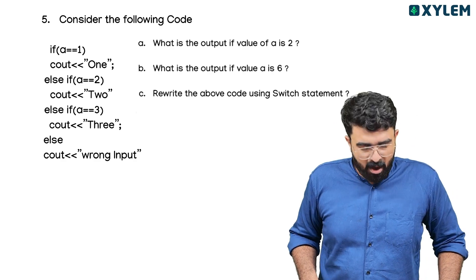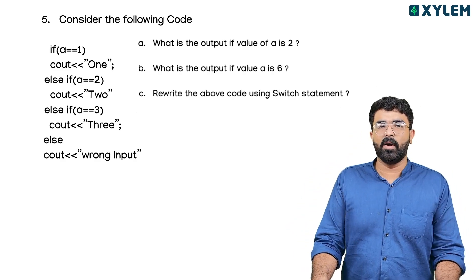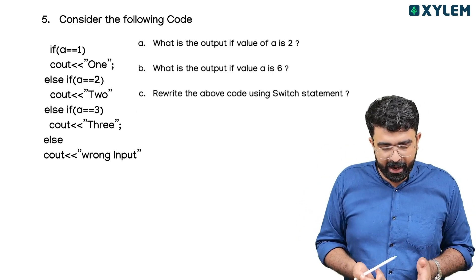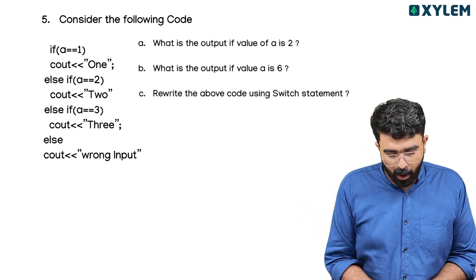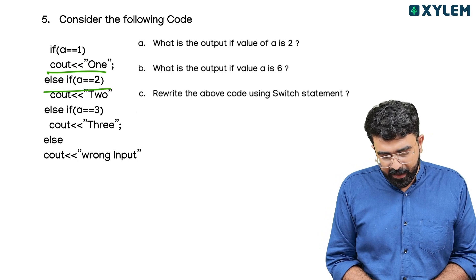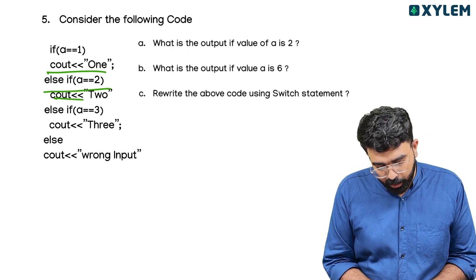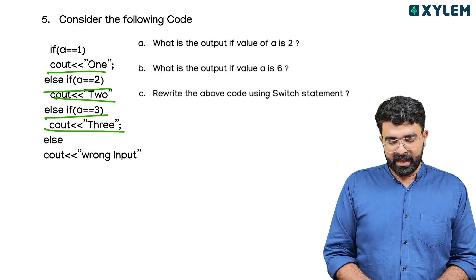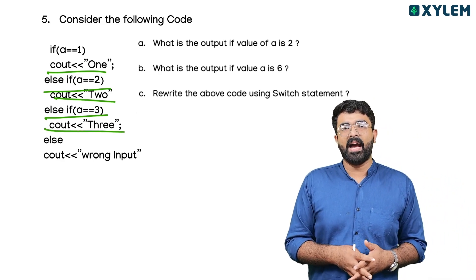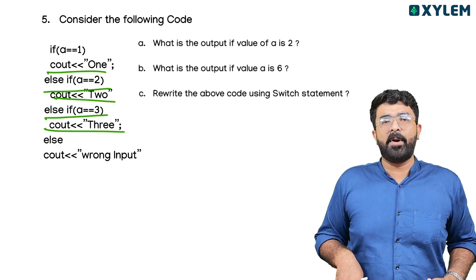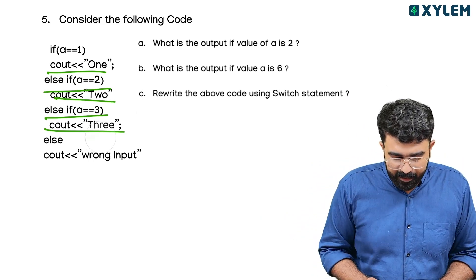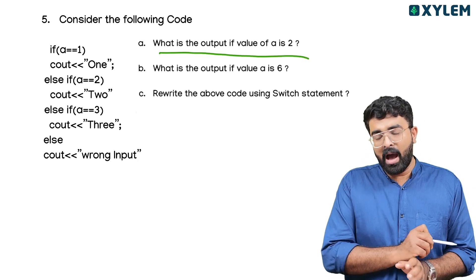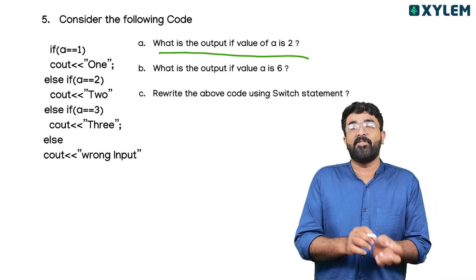Consider the following code: if a is equal to 1, cout 1; else if a is equal to 2, cout 2; else if a is equal to 3, cout 3; else wrong input. The question is: what is the output if the value of a is 2?